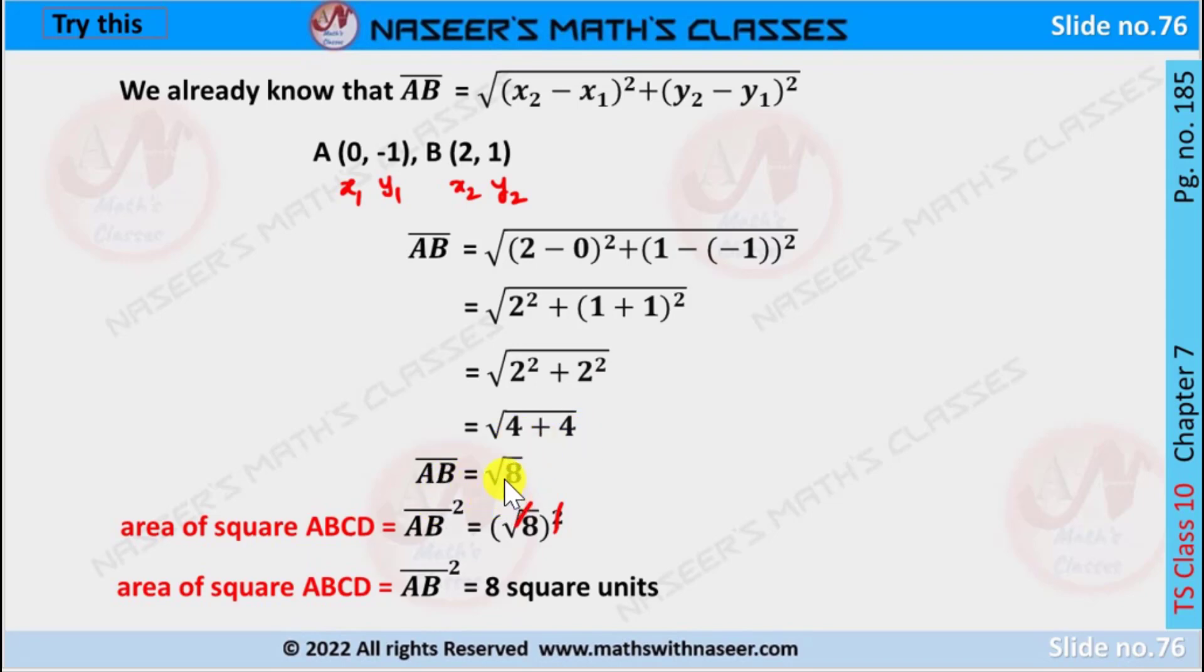Then we can write AB is equal to square root of 8. We already know area of the square ABCD is equal to side AB whole square. Here side AB length is root 8. Then we substitute this value, it can be written as root 8 all squared. We can cancel root and square, then we get 8. Therefore area of the square ABCD equals 8 square units.